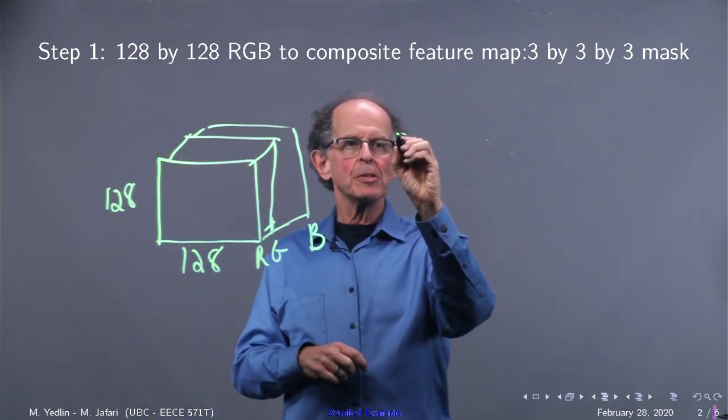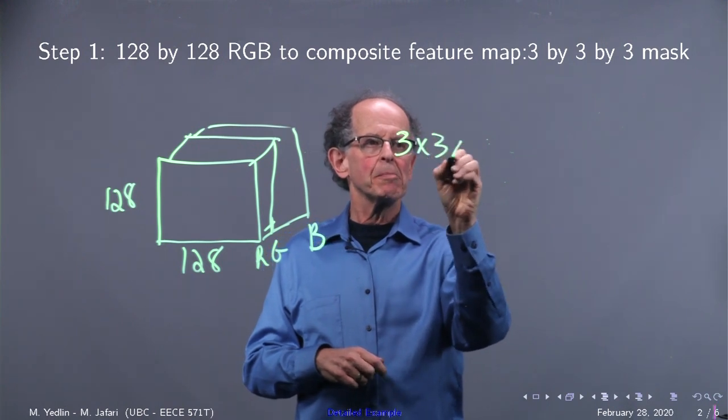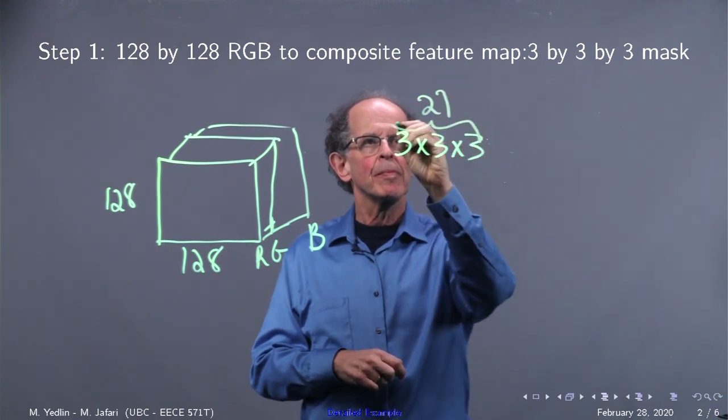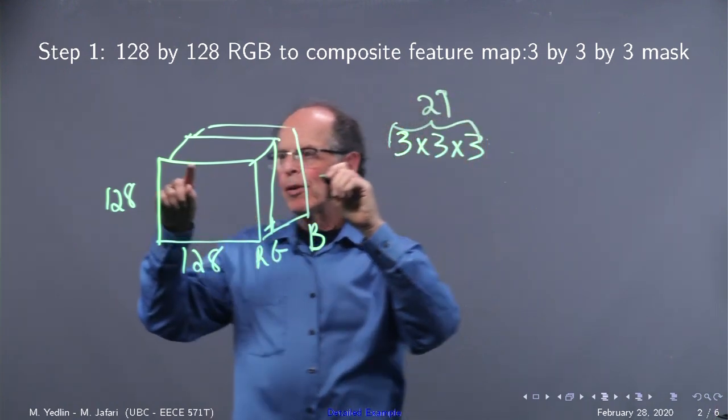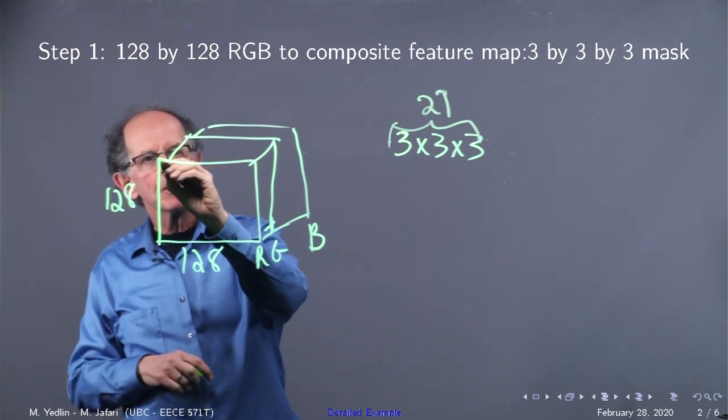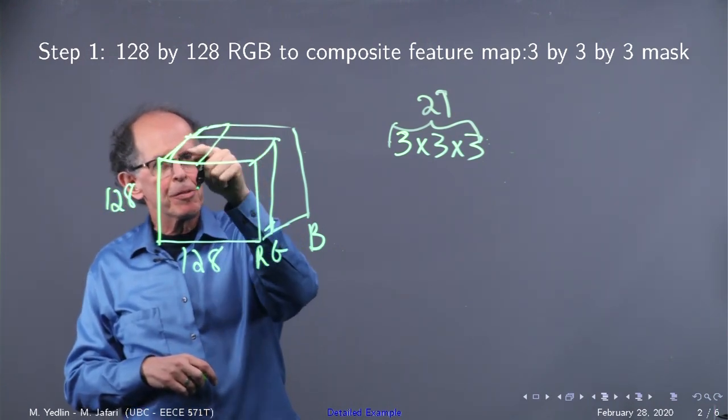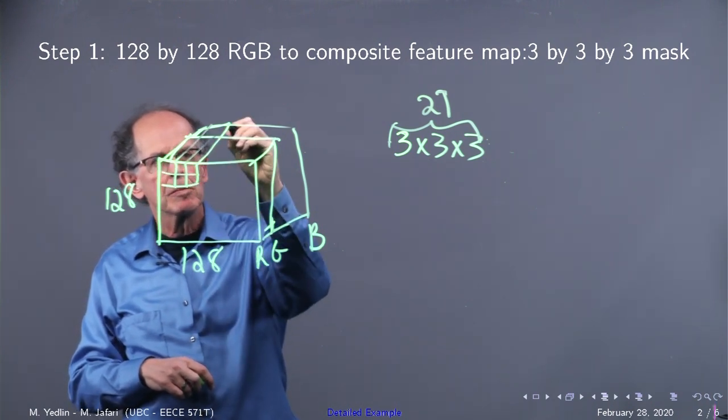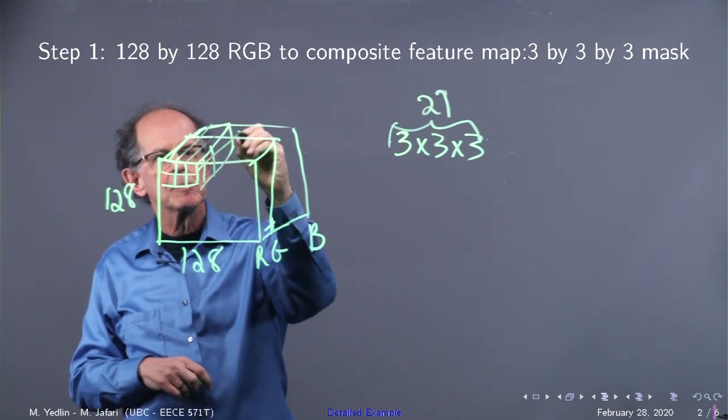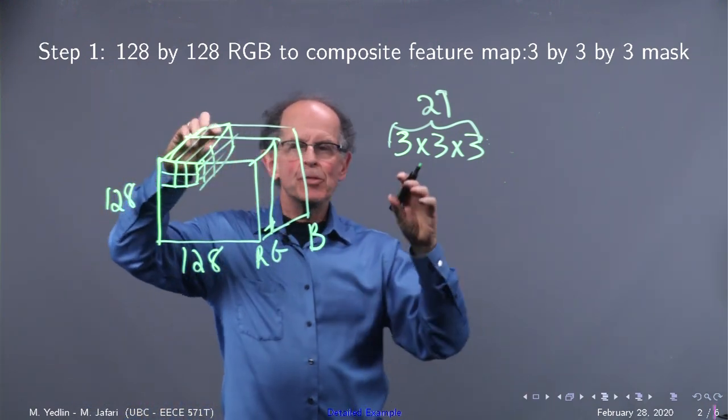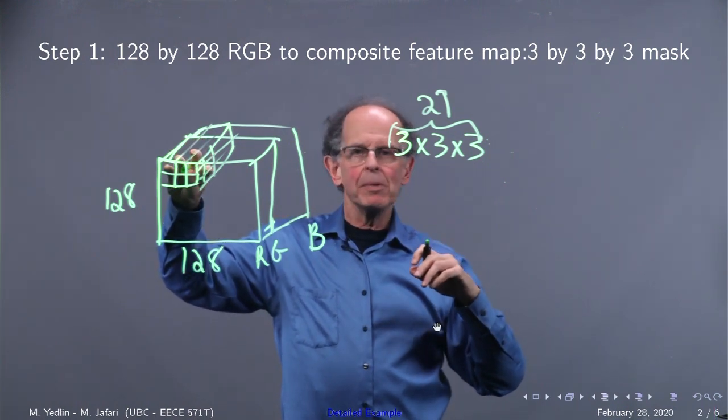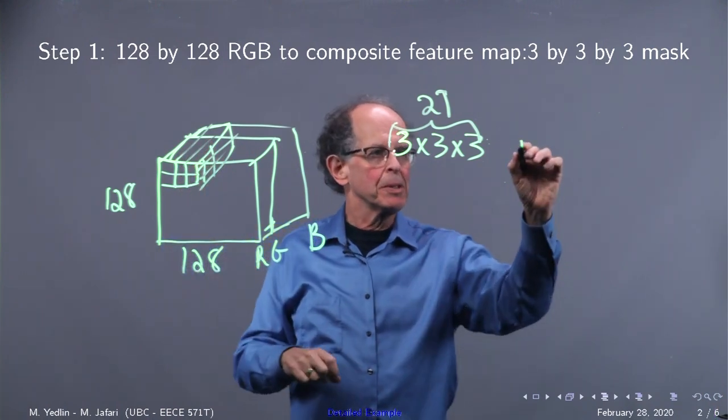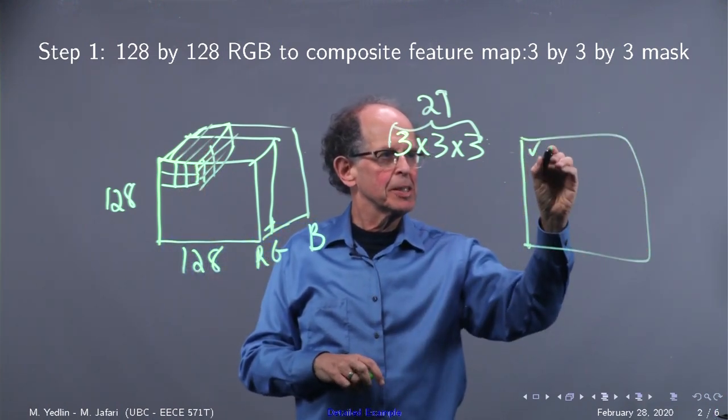What we're going to do is take a 3 by 3 by 3 volumetric mask. That's 27 numbers. We're going to overlay the mask in this corner so you can see that we're going to cover 3 deep and 3 here. That blob of weights is going to multiply the same size blob of data for the RGB and output one number. So there it is, right there.